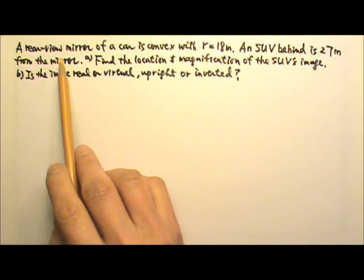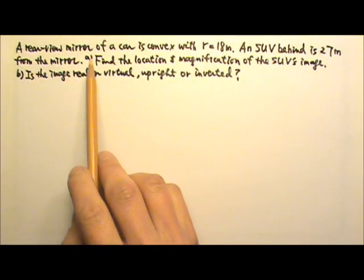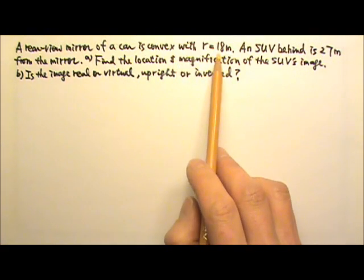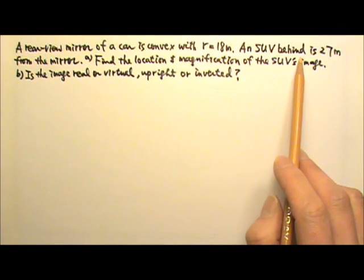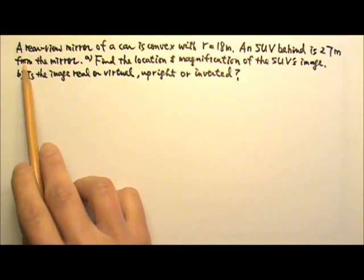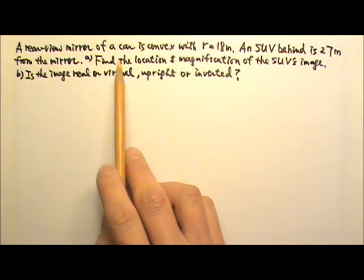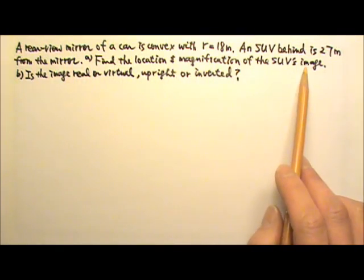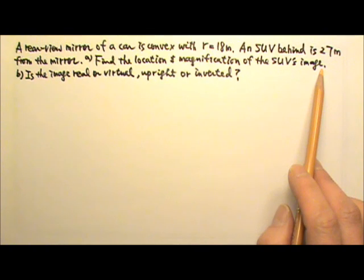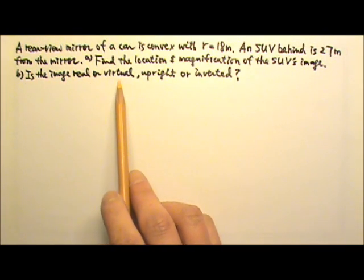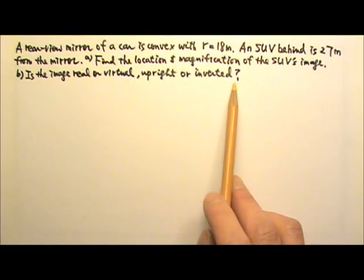The passenger side rearview mirror of a car is a convex spherical mirror with an 18-meter radius of curvature. An SUV behind the car in the right lane is now 27 meters from the mirror. Find the location and magnification of the SUV's image in that mirror. Is the image real or virtual, upright or inverted?